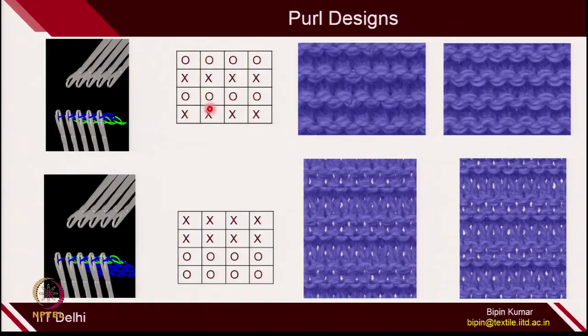Now let's move to pearl design. I already introduced this in week number 4. In pearl designs, we create technical front and back loops in the same column. In rib designs, you are creating technical front and back in the same course; in pearl designs, you are creating technical front and back loops in the same column or wale direction. The simplest pearl design is 1x1 — one technical front loop, then the next course technical back loops, then front loops, then back loops. If you look at the front side and back side, only heads and sinkers will be visible, and the architecture will be the same on both sides.